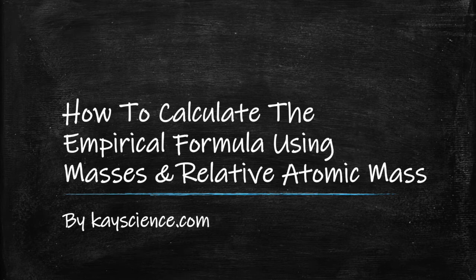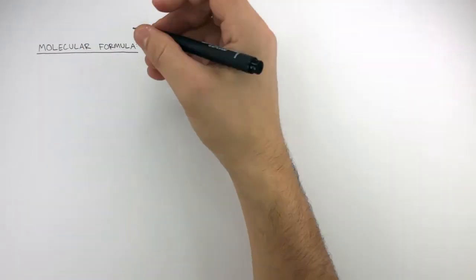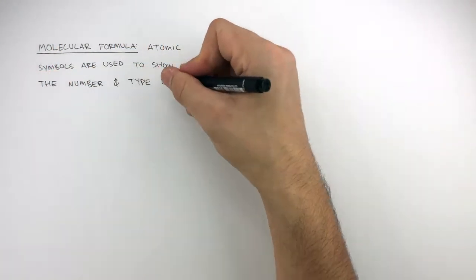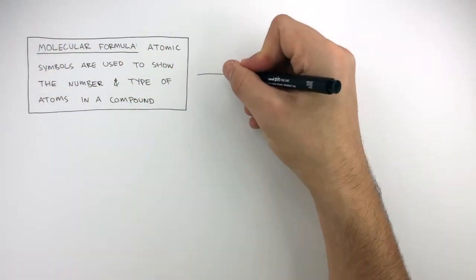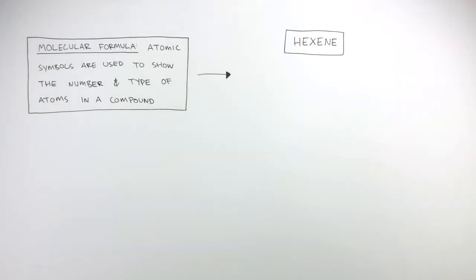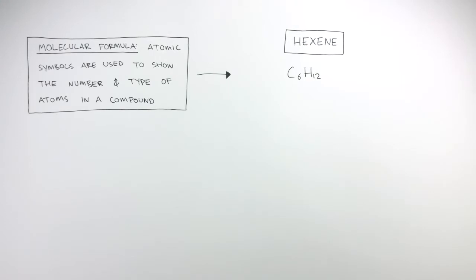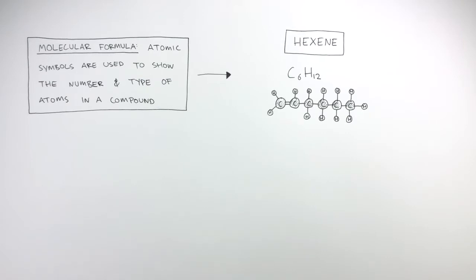How to calculate the empirical formula using masses and relative atomic mass by kscience.com. Molecular formula is when atomic symbols are used to show the number and type of atoms in a compound. For example, hexene has the molecular formula C6H12, and when we use a ball-and-stick model, we can see there are six carbon atoms and 12 hydrogen atoms in this molecule.